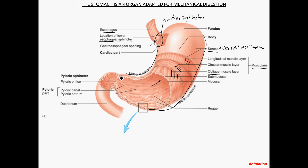At the distal end of the stomach there's another sphincter — the pyloric sphincter — and just before that is an area called the pylorus. This is where most of the chemical digestion takes place before the contents of the stomach are moved into the duodenum, the first part of the small intestine.